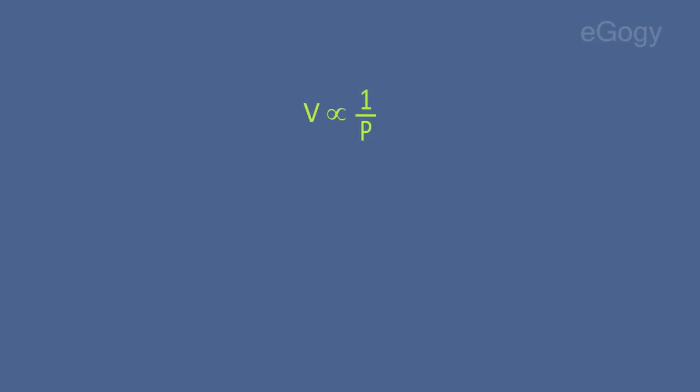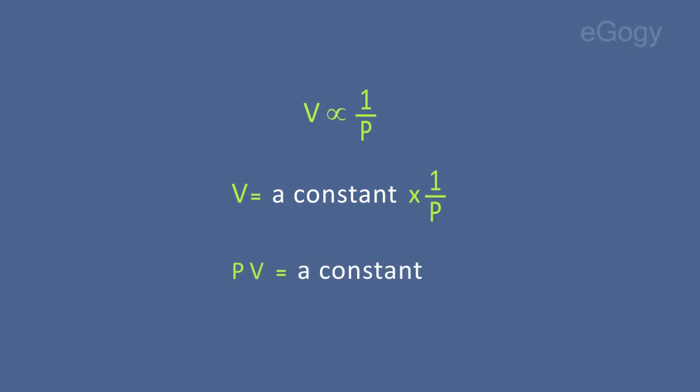Mathematically, V is directly proportional to 1/P. V equals a constant into 1/P. Therefore, PV equals a constant.